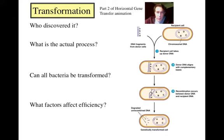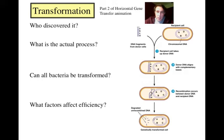What factors affect the efficiency of transformation? It should come as no surprise that the larger the piece of DNA trying to get into a cell, the more difficult it is to transform. Larger plasmids are much harder to get into cells than smaller ones. The form or shape of the plasmid — whether it's supercoiled or a floppy circle — can also make it more or less efficient. Other factors include cell type, temperature, and plasmid size.